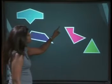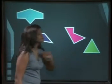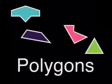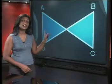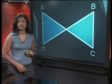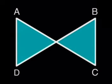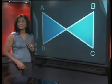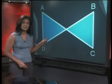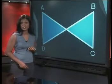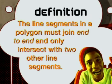So are these shapes definitely polygons? They are closed and they are made up of many line segments. So yes, definitely these are polygons. But have a look at this shape — this one is not a polygon, yet it seems to fit the definition. It is closed and made from line segments. In order to make sure that this definition excludes this type of shape, we must add to the definition. The line segments in a polygon must join end to end and only intersect with two other line segments.